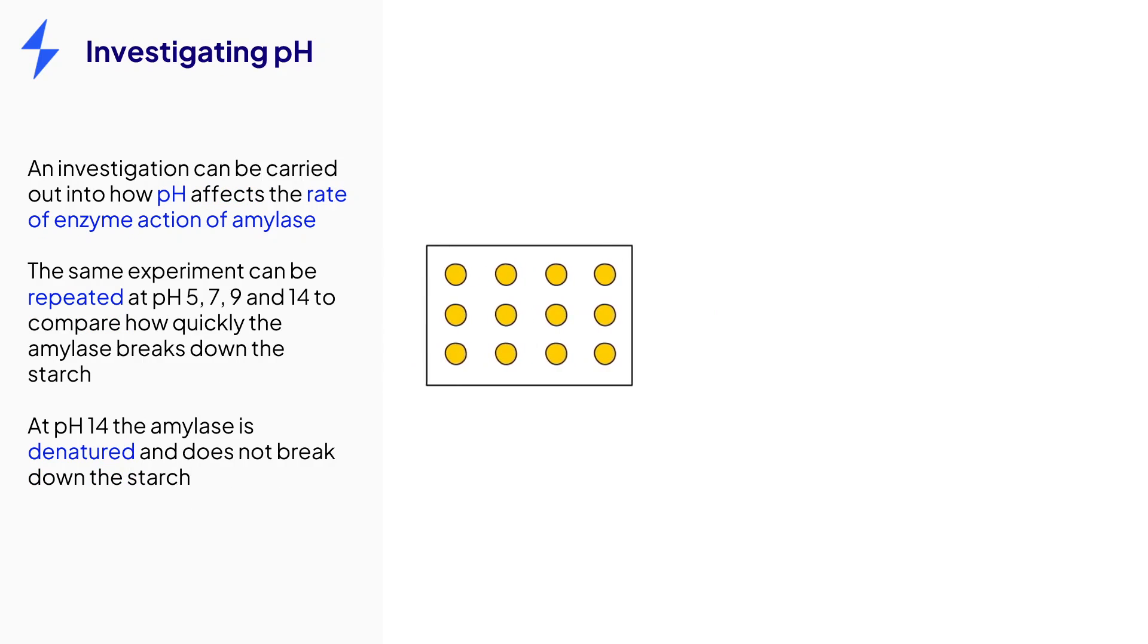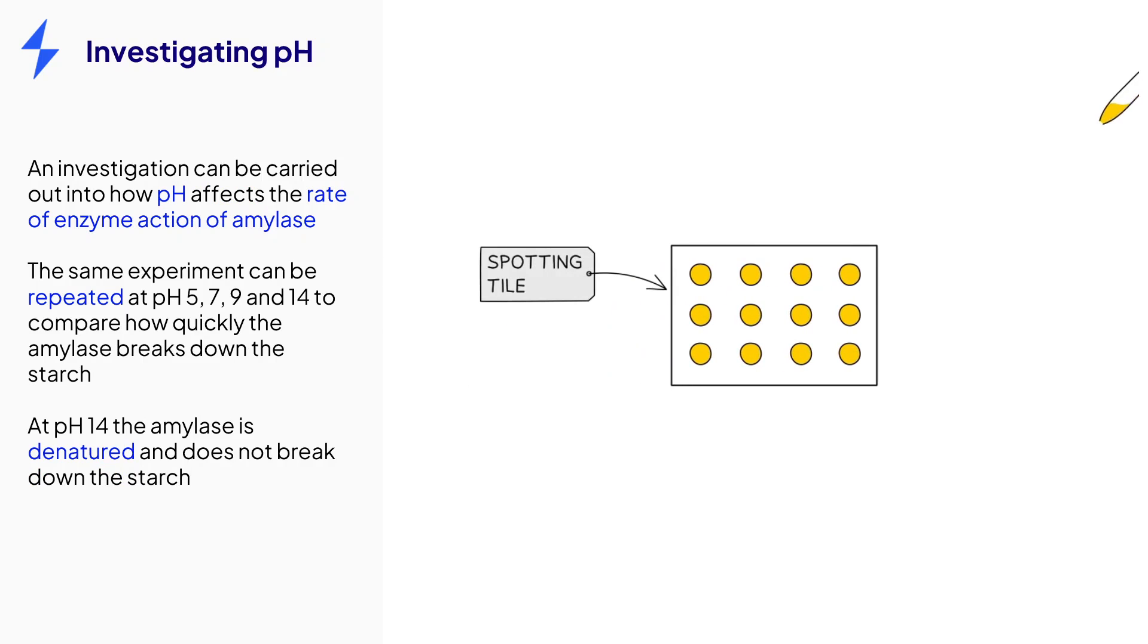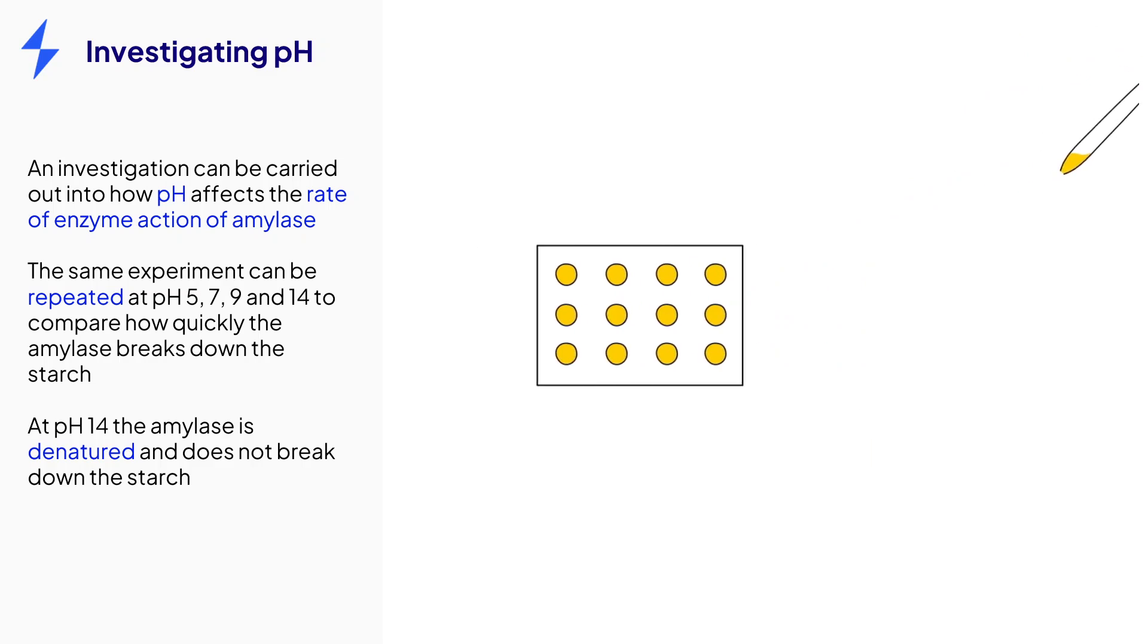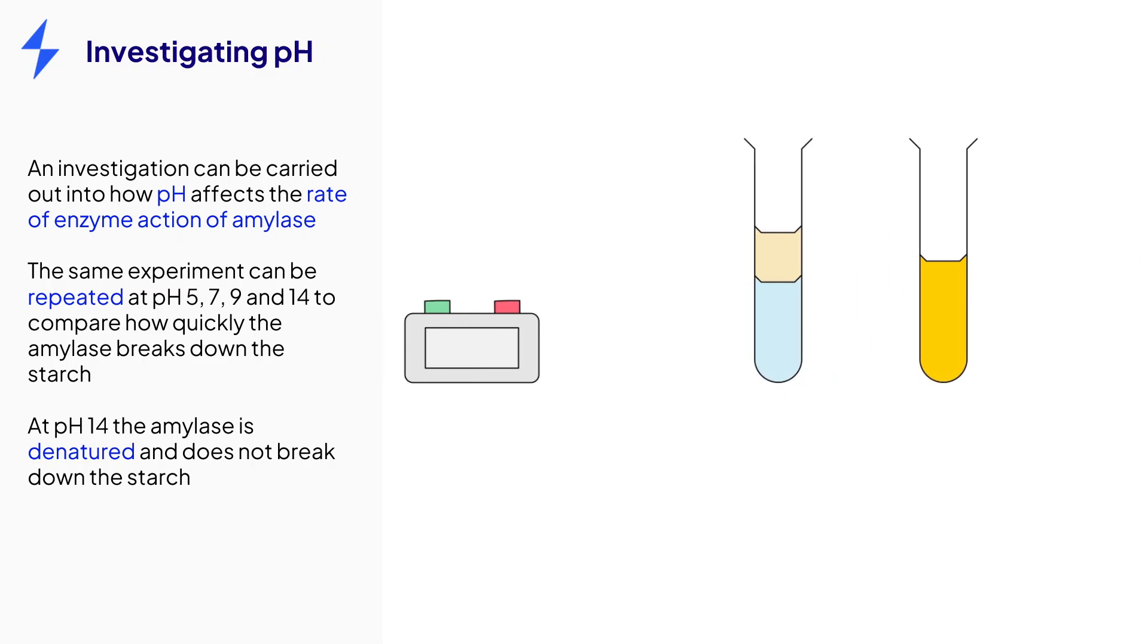We can carry out the following investigation to see how pH affects enzyme reaction of amylase. First, we start by preparing a spotting tile with a couple of drops of iodine in each well. The next step is to measure out all the solutions we need. Here we have one test tube with 1 cm³ of pH-7 buffer solution and 2 cm³ of amylase solution. There is also a second tube with 2 cm³ of starch solution.